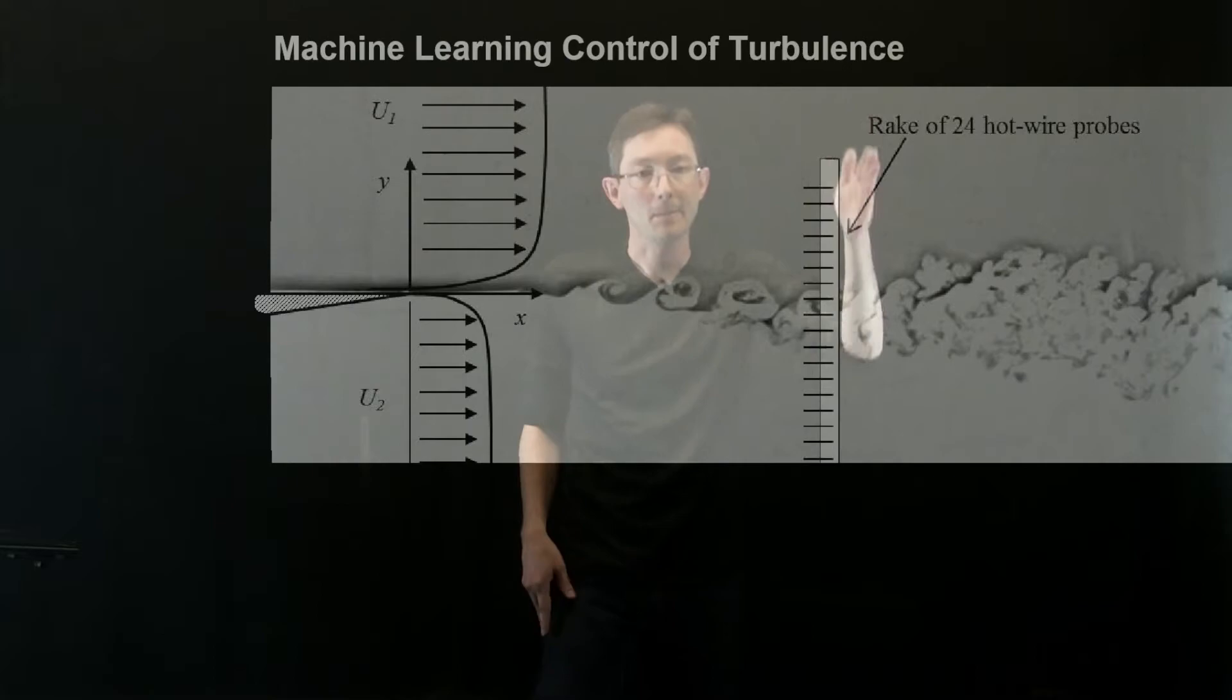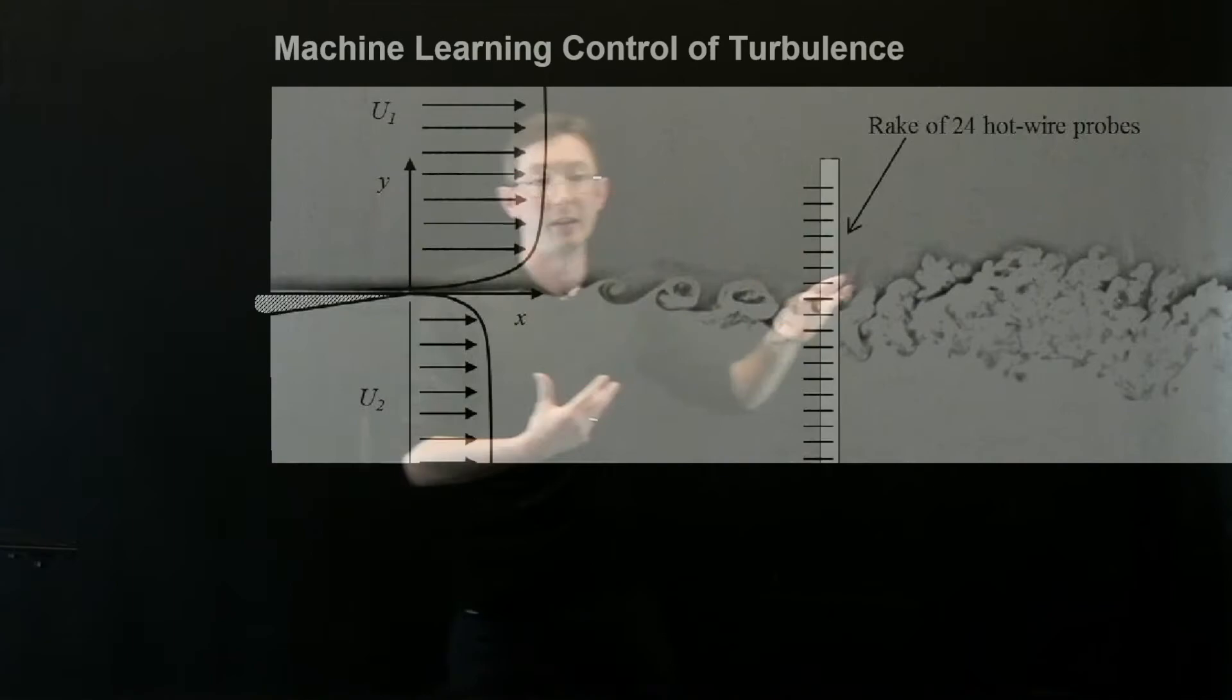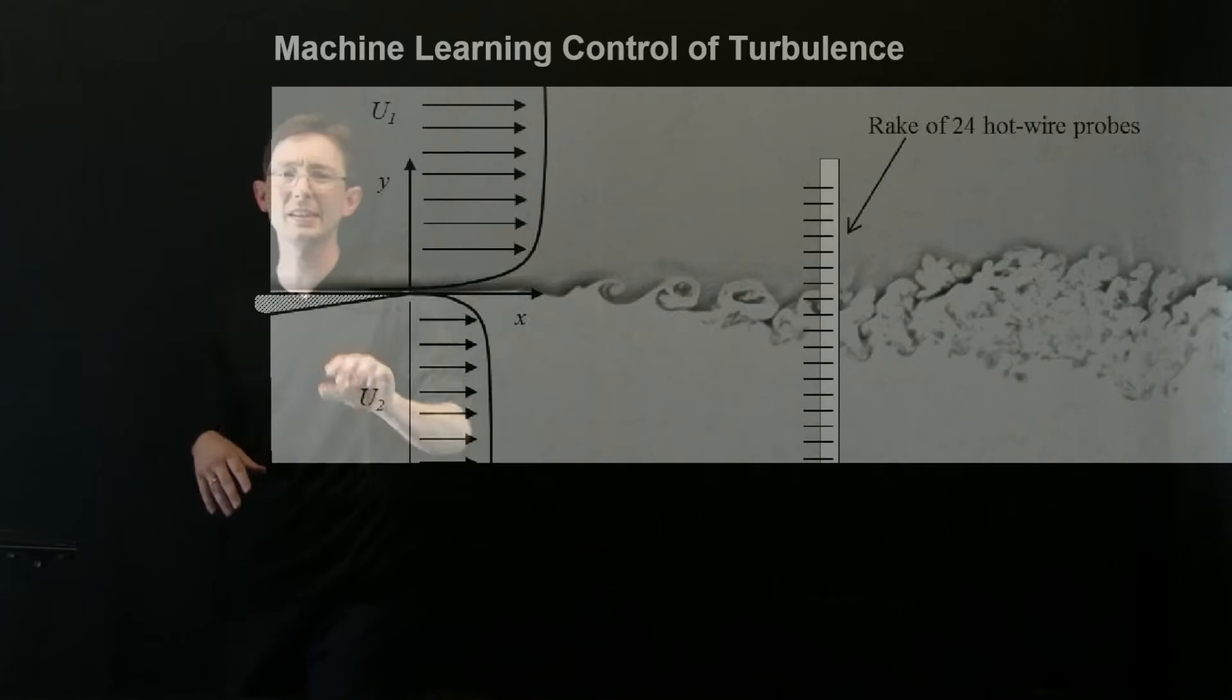And in this experiment, you can measure 24 hotwire measurements at some location downstream. And the objective is to try to either increase or decrease the mixing kind of the rate of this turbulent breakdown at some downstream location.